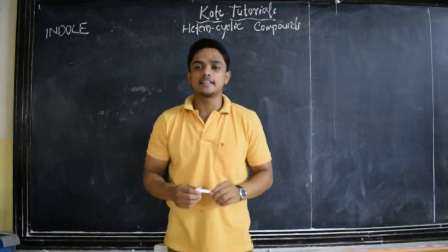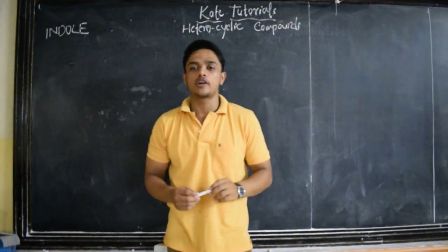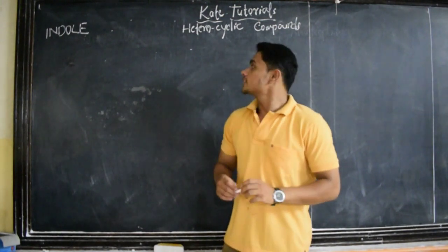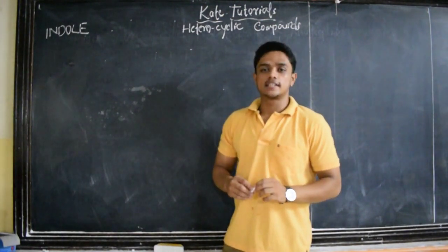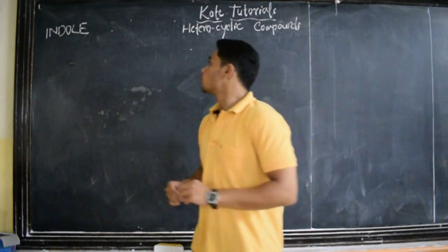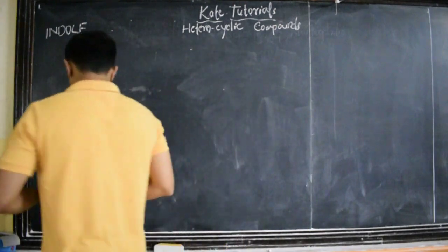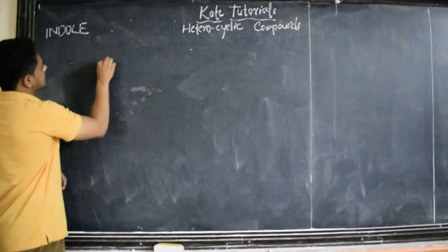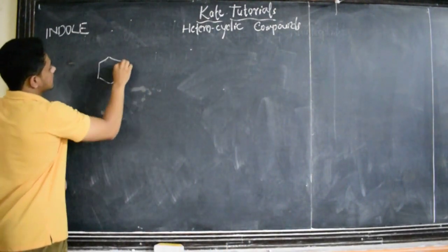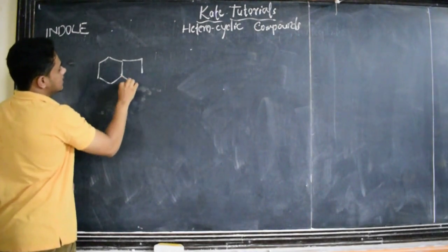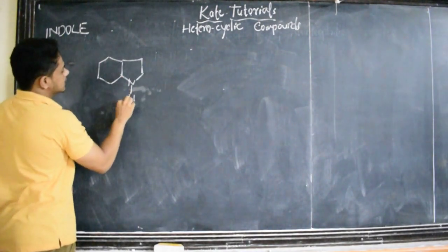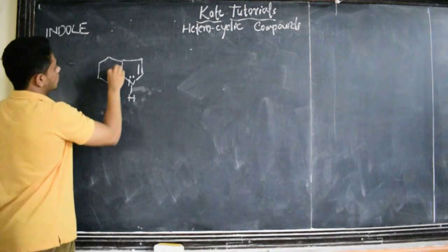Good evening friends. In this class we are going to discuss about indole — what is indole. Let us discuss its structure and orbital structure. The structure of indole is like this: it has got a benzene ring and a pyrrole ring. This is the structure of indole.